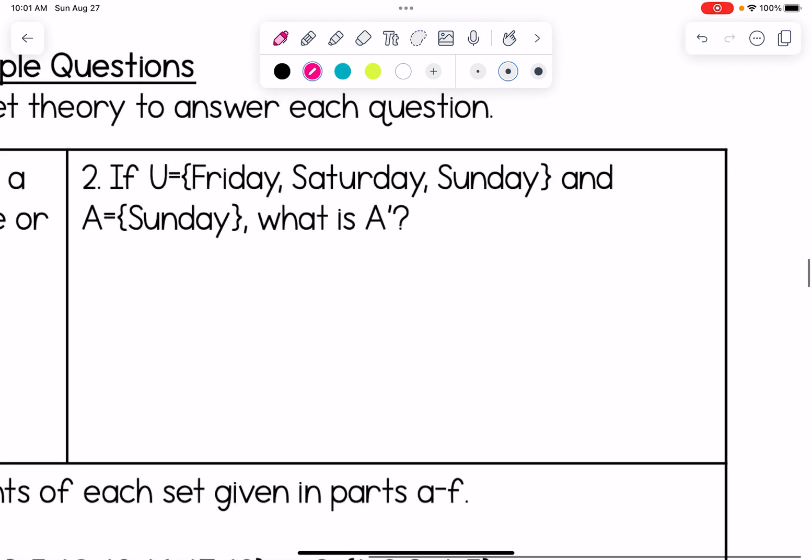Number two, if U is Friday, Saturday, Sunday and A is Sunday, what is A prime? And we have this notation here, this is our notation for complement of a set. So what is the complement of A? That means what things are basically not in A and so that means the complement of A would be Friday and Saturday. The parts of the universal set that were not in A.